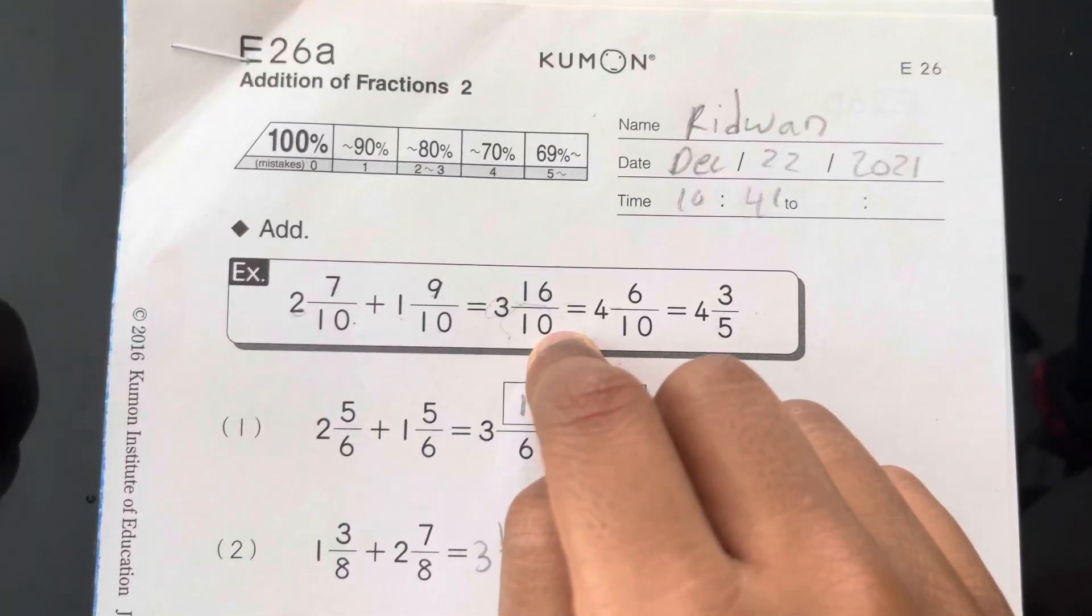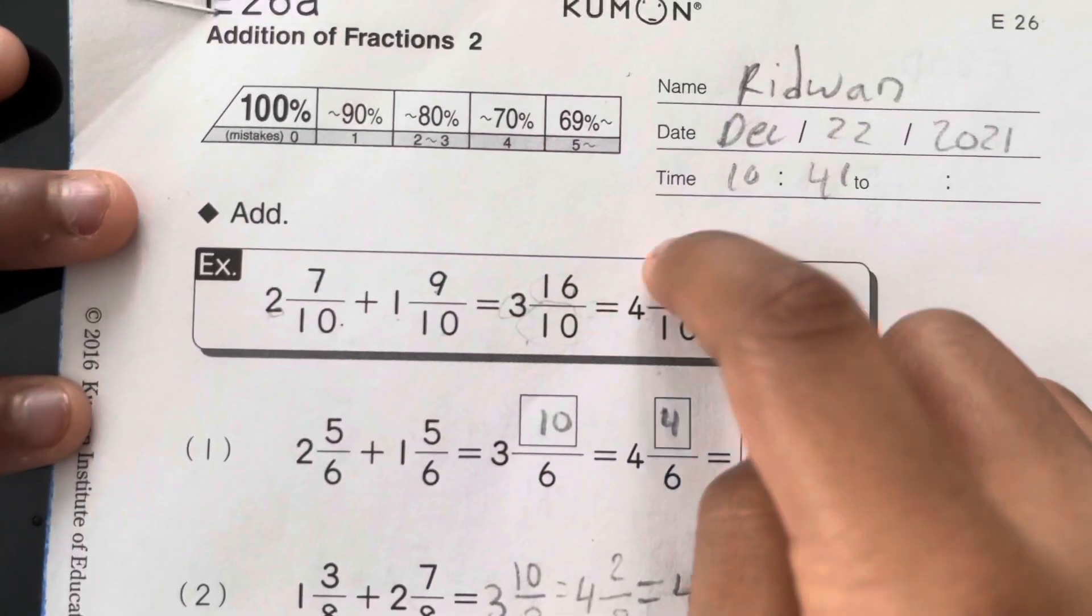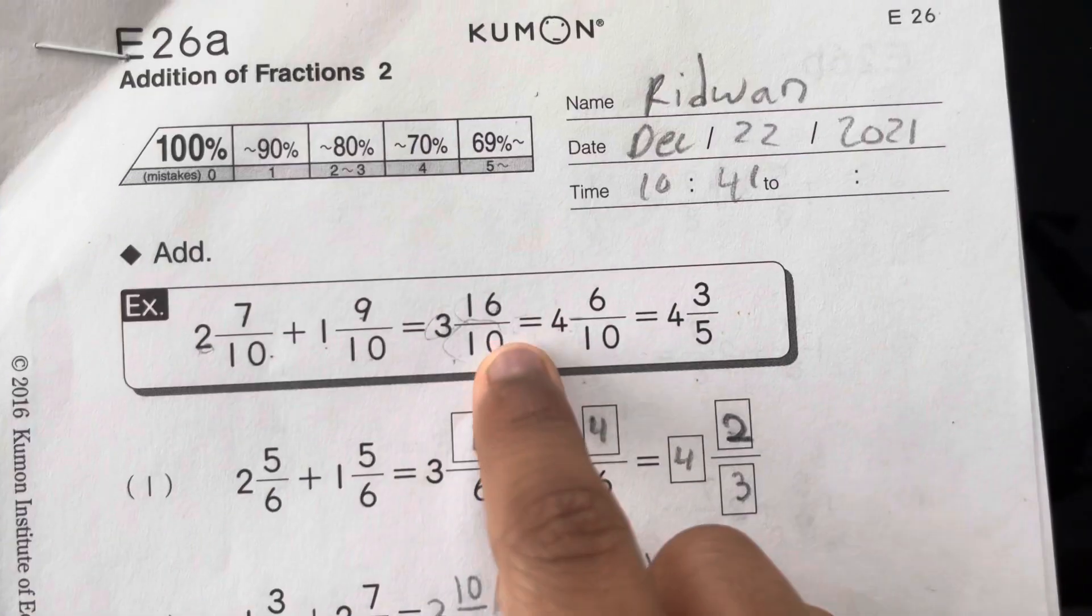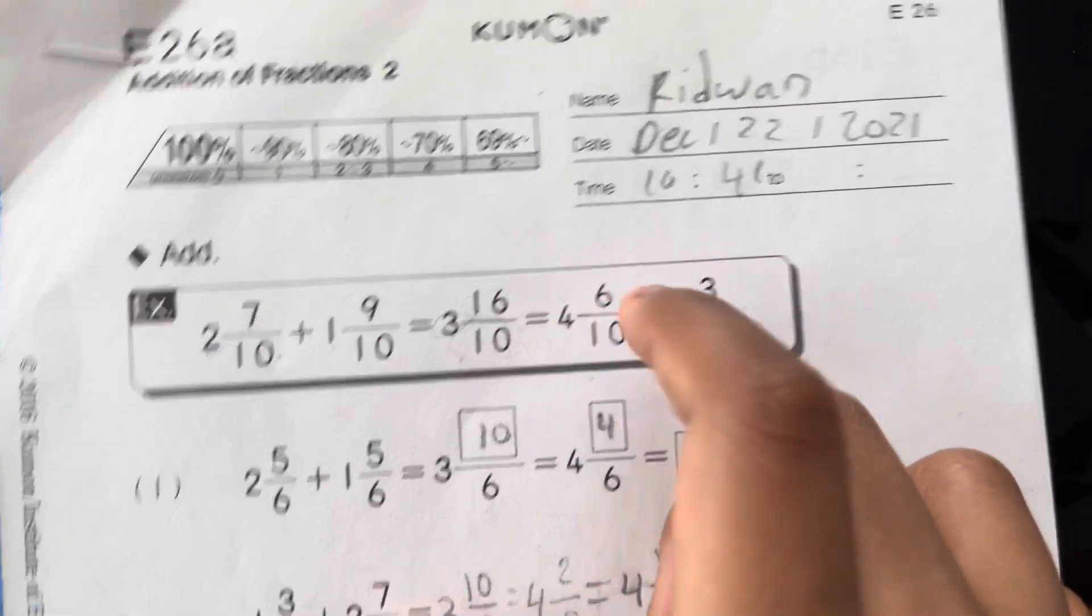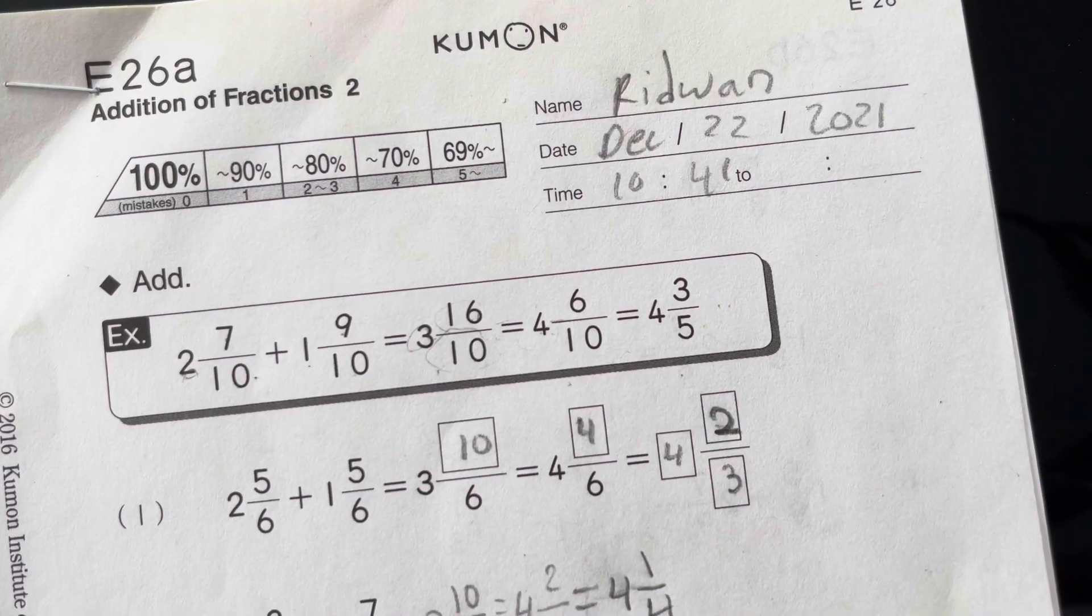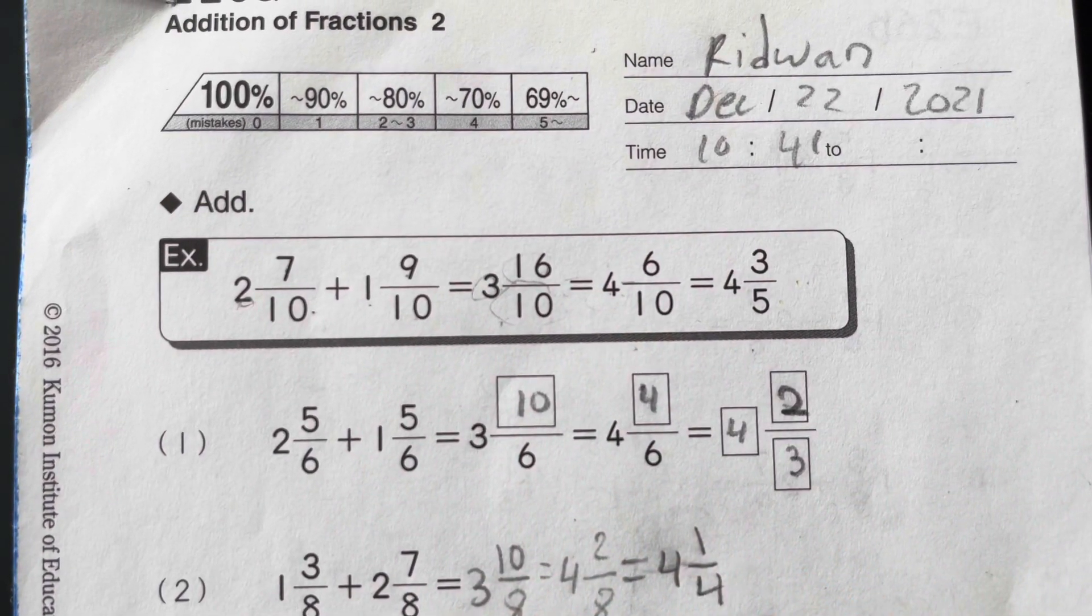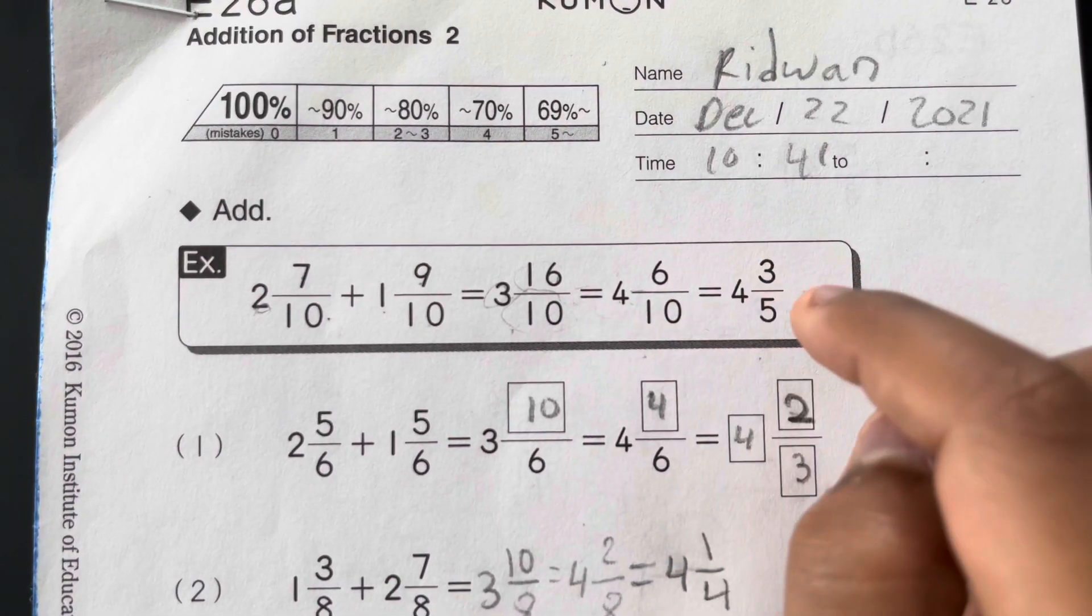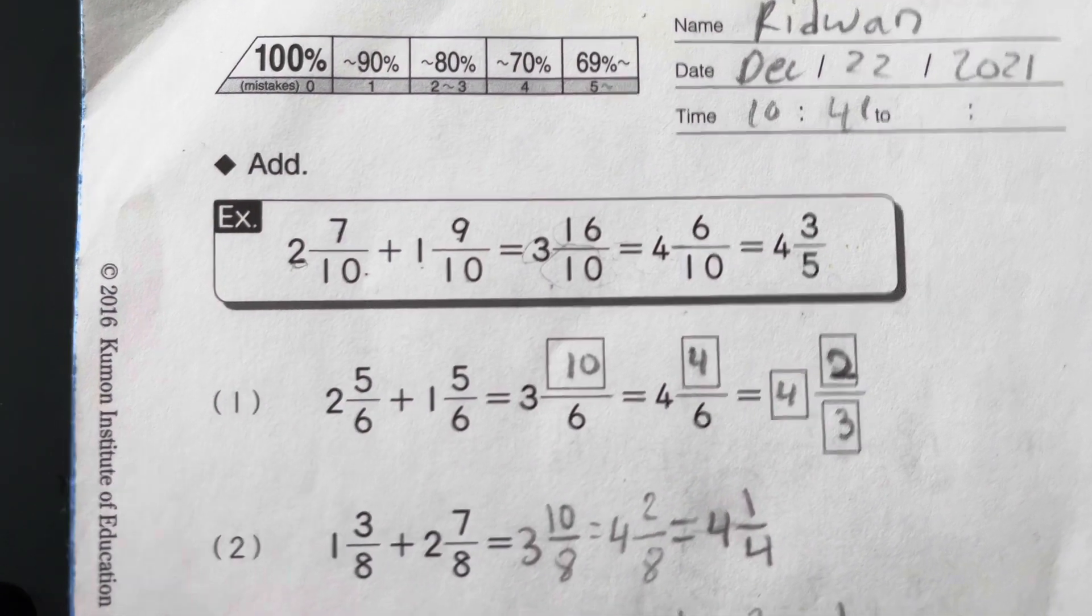So now 16 can divide by 10 again one time, so the 1 plus 3 equals 4. We put the 4 here, and then 16 minus 10 equals 6. We put the 6 here, and then the denominator stays the same.